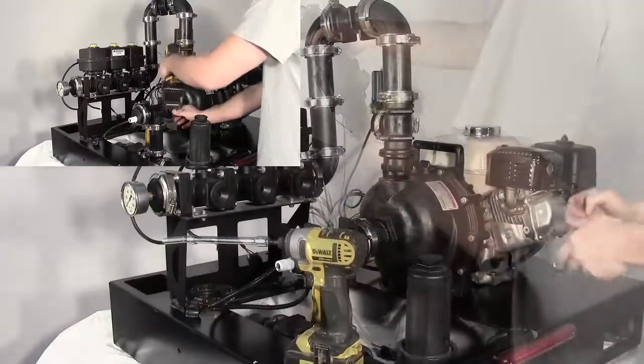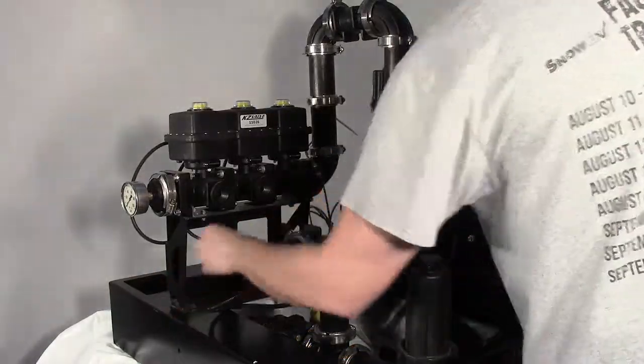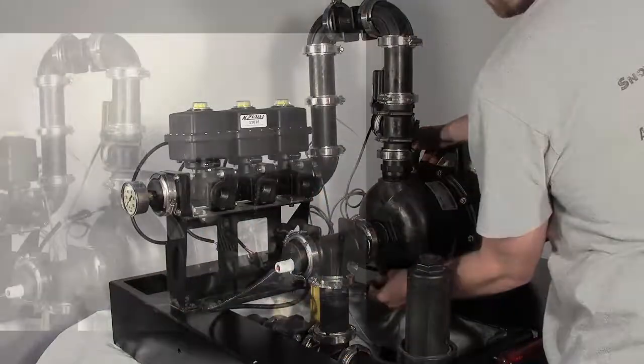Insert rubber gaskets into the inlet and outlet side of pump and tighten band clamps. Thread the drain plug into the pump housing.